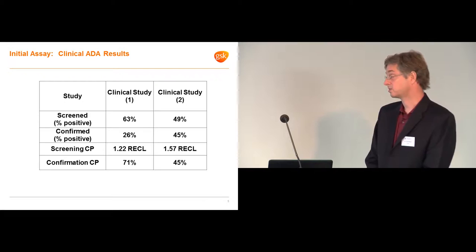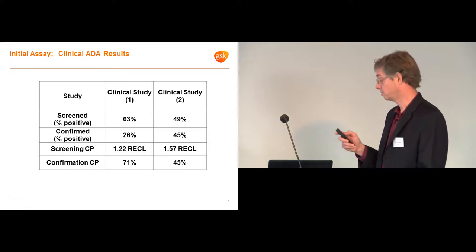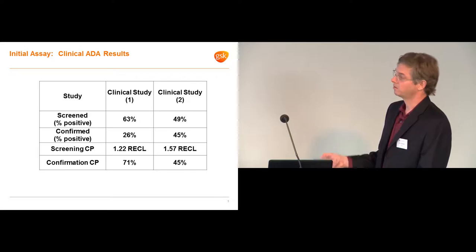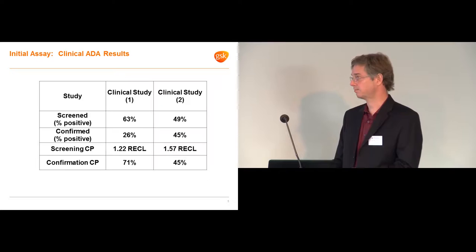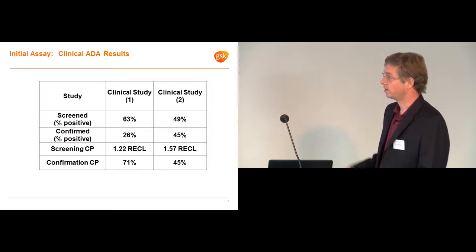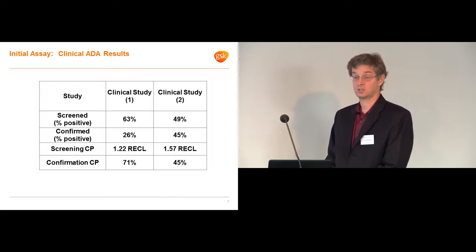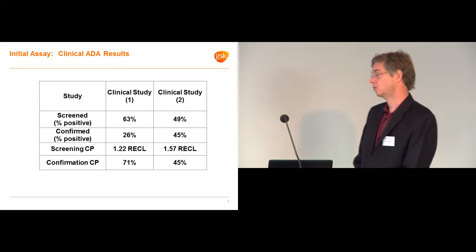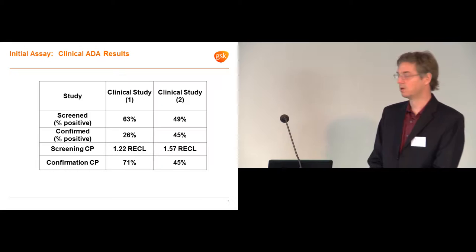So the assay was validated, transferred to a CRO, and used in a clinical trial. And we had sort of a 63% positive rate. So the screening cut point was done during validation with a commercially sourced disease population. And we had 1.22 relative UCL, so that's normalized to the NC pool. So we had a pretty high screening positive rate, and then of those, the confirmed positive was 26%, which is pretty high. There was no sort of aberrant PK results. Patients seemed to tolerate pretty well. So although the results were high, it did sort of raise a little flag that maybe something's up with the assay, but it wasn't worth sort of redesigning it at that point.